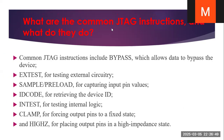What are the common JTAG instructions and what do they do? The most commonly used JTAG instructions include BYPASS, which allows data to bypass the device using a single-bit bypass register. EXTEST is used for testing the external circuitry — that means the interconnections between two devices. SAMPLE/PRELOAD is used for capturing input values. These three — BYPASS, EXTEST, and SAMPLE/PRELOAD — are the mandatory instructions. The optional instructions are ID code, INTEST, CLAMP, and HIGHZ.